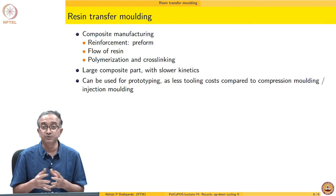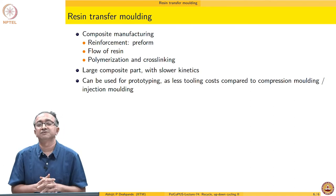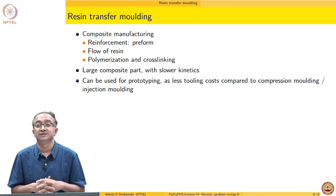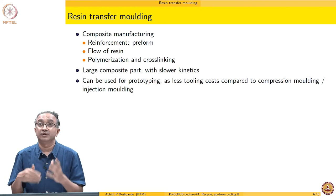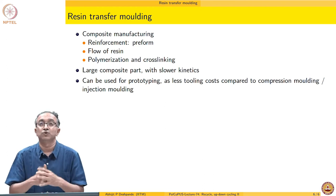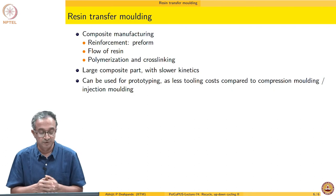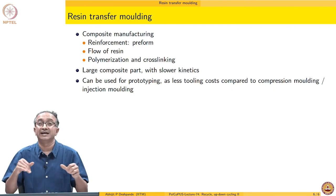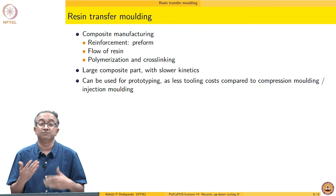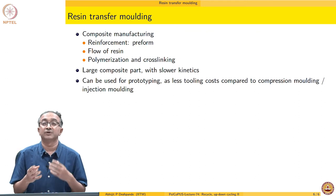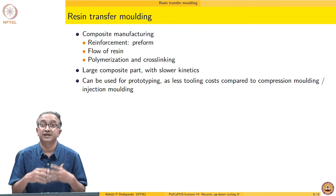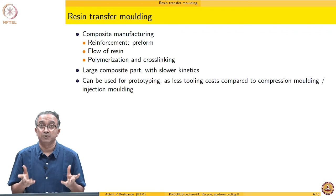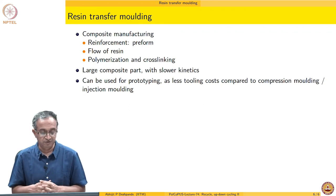This is useful because the tooling cost associated with resin transfer molding is much less. Whenever you have injection molding or any other molding operation you require a mold which is quite costly. But resin transfer molding uses bag and only the bottom surface is what is used for tooling. Therefore, it ends up being less costly compared to many other composite making or polymer making operations.